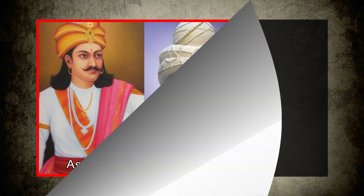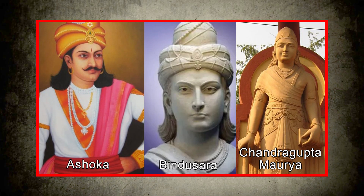Hello and welcome, dear students. Today we are going to discuss the decline of the Mauryan Empire. The first dominion over all of India was the Mauryan Empire. Ashoka, Bindusara, and Chandragupta Maurya were successful in establishing the Mauryan imperial rule over a significant number of Janapadas or kingdoms.